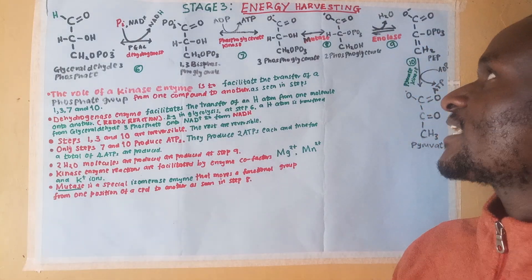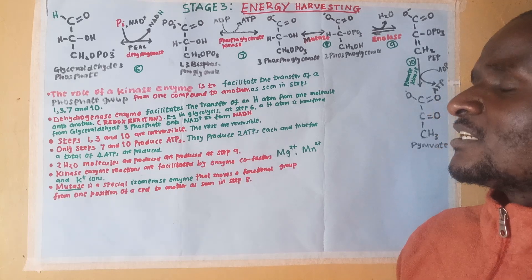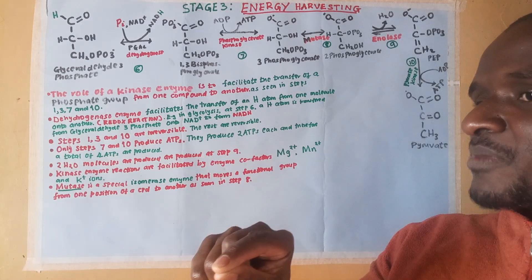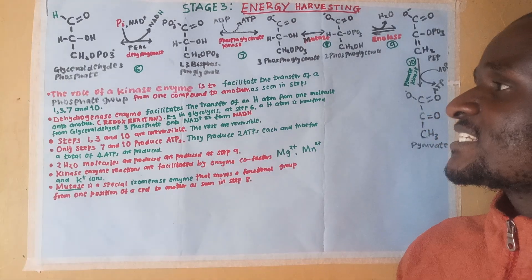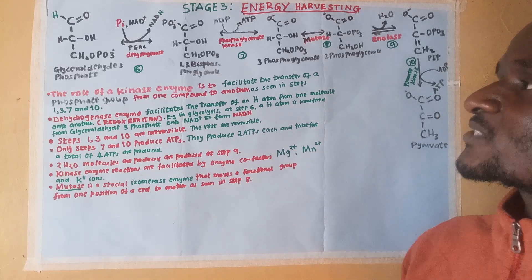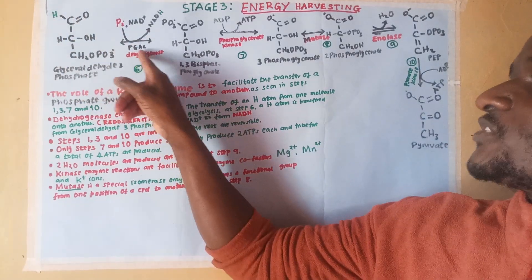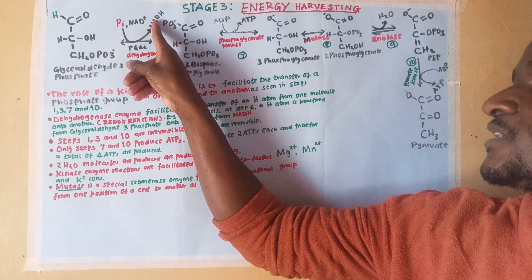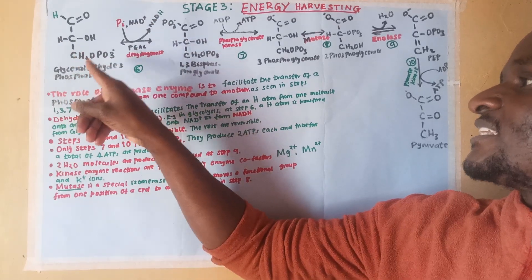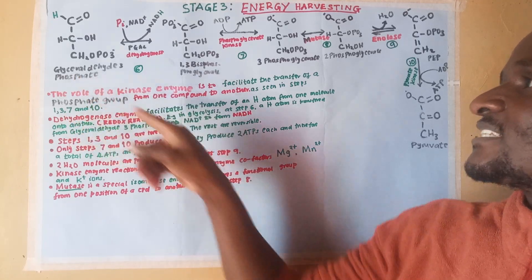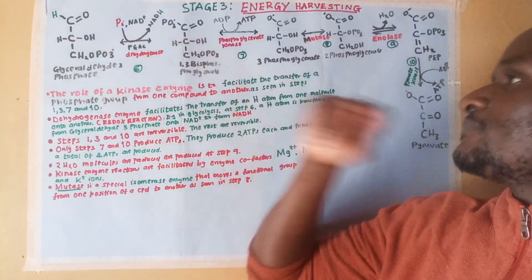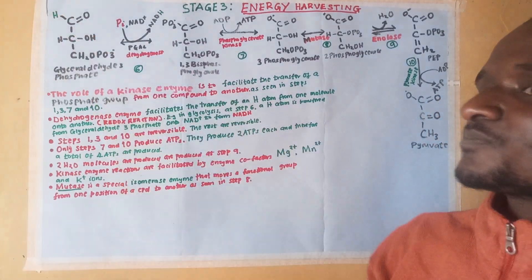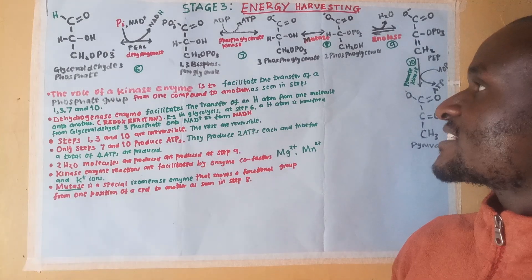We are at Stage 3, the energy harvesting stage. The role of a dehydrogenase enzyme is to move a hydrogen atom from one compound onto another. At Stage 3, Step 6, glyceraldehyde-3-phosphate has a hydrogen atom at carbon number one. The dehydrogenase enzyme removes it and adds it onto NAD+ to form NADH. An inorganic phosphate then interacts with the resulting molecule, and the resulting compound is 1,3-bisphosphoglycerate.